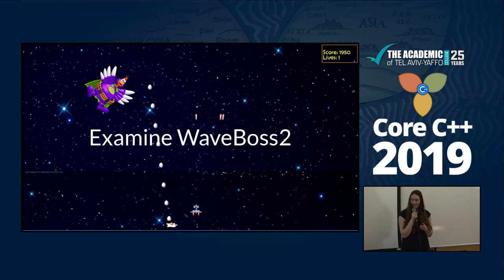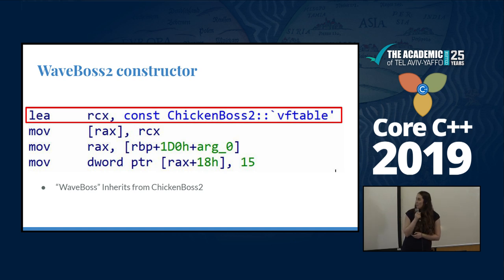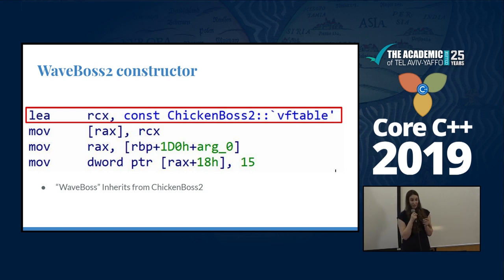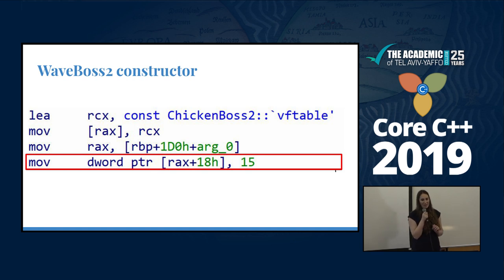So we examine wave boss two. We're going to repeat a bit of the process — analyzing constructors. The wave boss uses the Vtable of 'chicken boss two', which is different from wave boss, and it also calls the constructor of chicken boss. There is also a weird number as a member that we still don't know — but remember it, it will come back in a few slides.